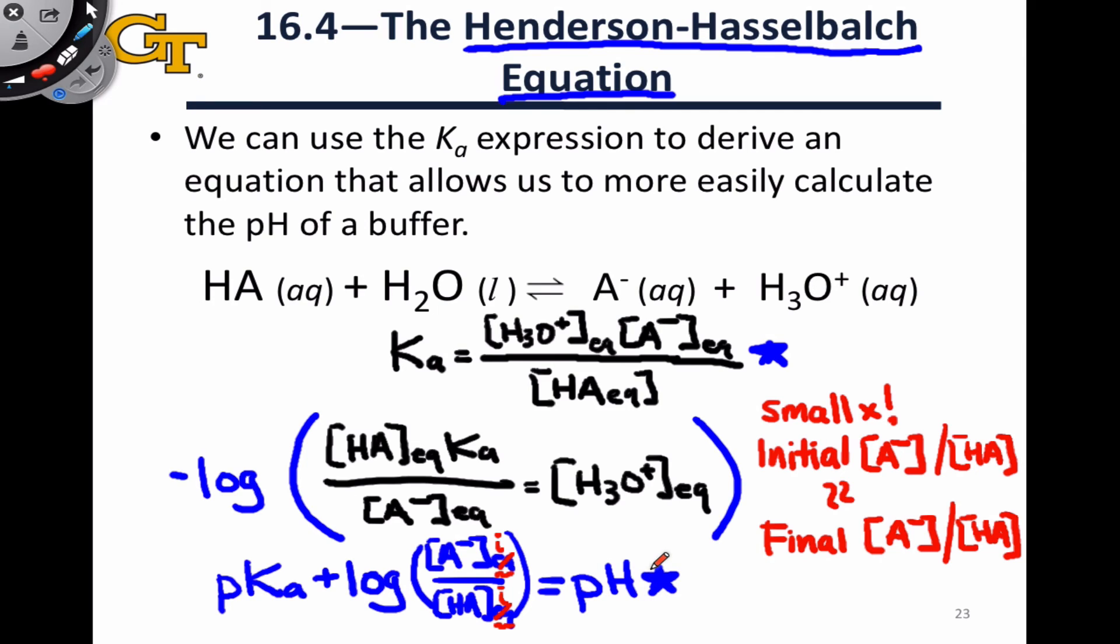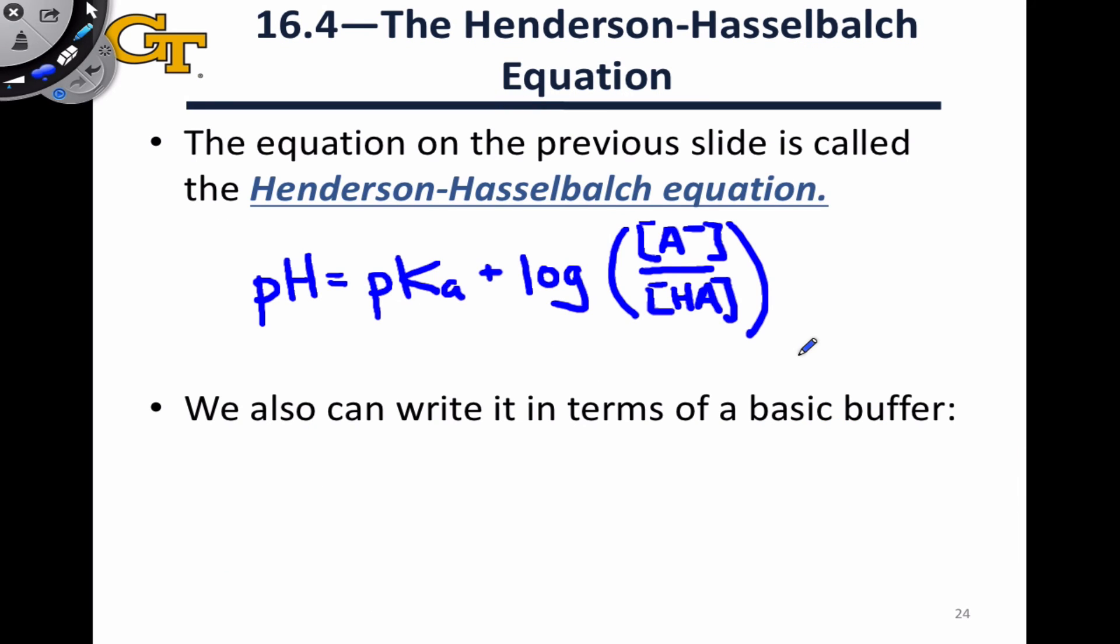Usually the difference between applying the full-blown ice table approach without making approximations and applying the Henderson-Hasselbalch equation using initial concentrations is negligible. So the Henderson-Hasselbalch equation makes our lives a lot easier by allowing us to skip all of the ice table approach, provided the small x approximation applies and goes straight to plugging in concentrations and a given pKa to calculate the pH of a buffer.